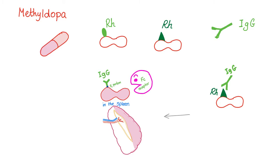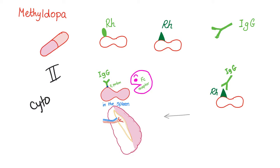Back to Methyldopa. Methyldopa, the drug, will change or alter the RH antigen on the surface of your red blood cell — now it has a different shape. IgG will recognize that because it's not familiar; this sounds non-self. It attaches to it, they go nicely to the spleen, and macrophages will attack them. The type of hemolytic anemia is extravascular, and the type of hypersensitivity reaction is type 2, or cytotoxic.